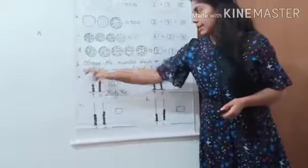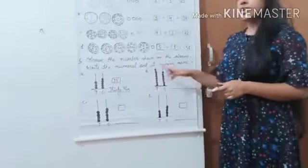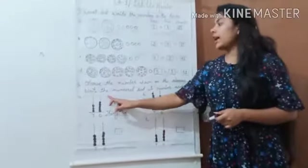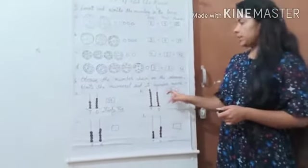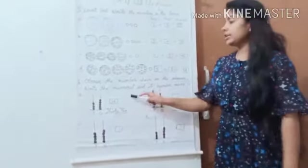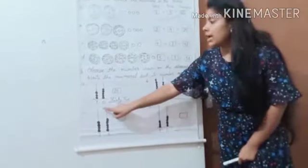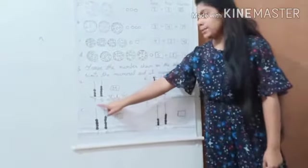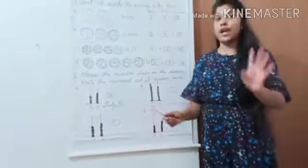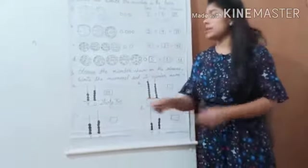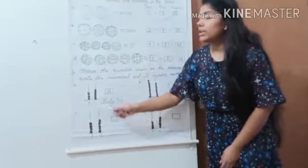Question number 6. Observe the number shown on the abacus and write the numeral and its number name. Students, here is an abacus and in which there are shown numbers at tens space and at ones space. Tens space, we have to count on beads, that is 1, 2 and 3.